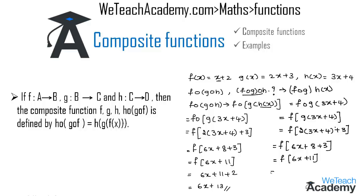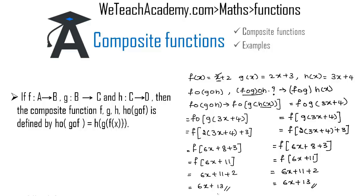Finding f of 6x plus 11 by replacing x with 6x plus 11, we get 6x plus 11 plus 2, which is nothing but 6x plus 13. By this we observe that both the functions f circle g circle h are equal.